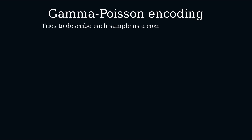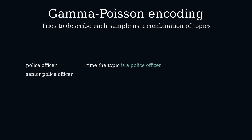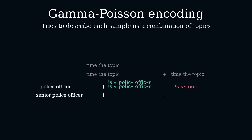With the Gamma Poisson encoder, we try to describe each sample as a combination of topics. For example, given the two samples 'police officer' and 'senior police officer', we could describe the first as being one time a topic describing the fact of being a police officer, and the second as being one time that same topic plus one time a topic describing seniority. This description gives us an encoding.